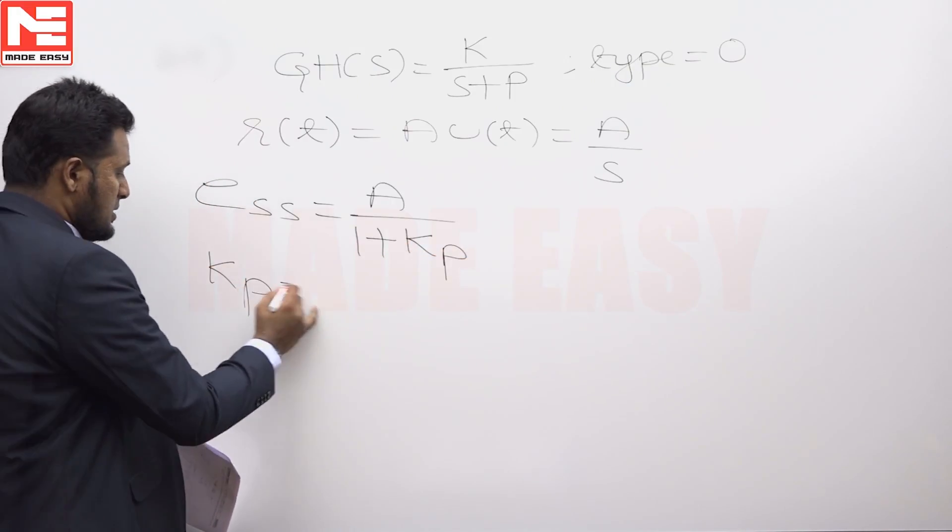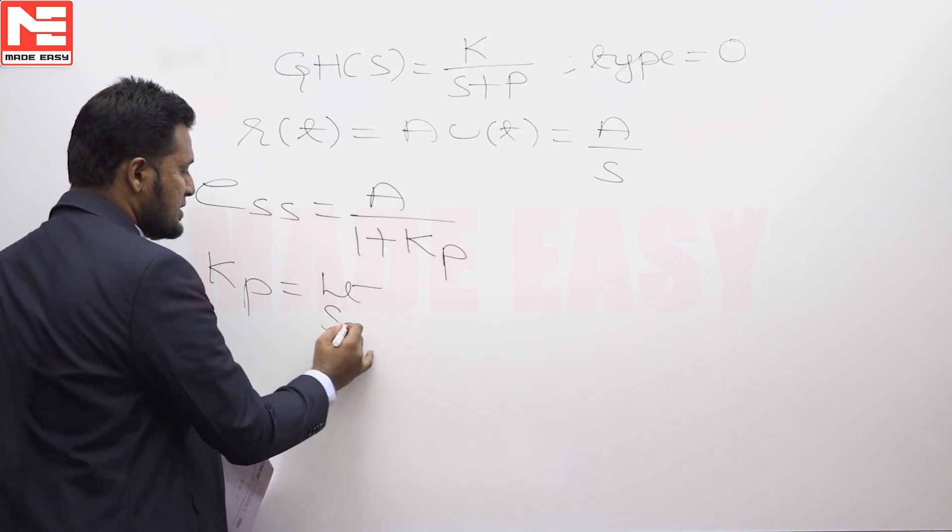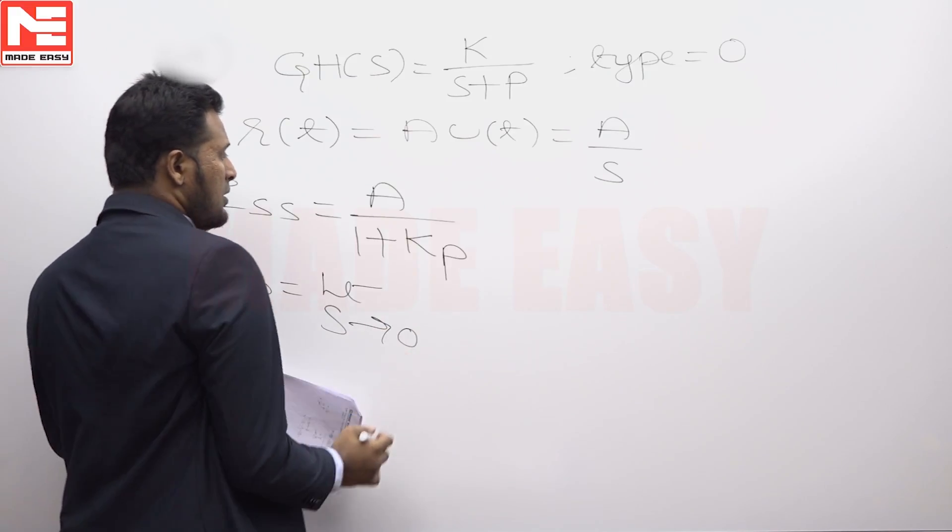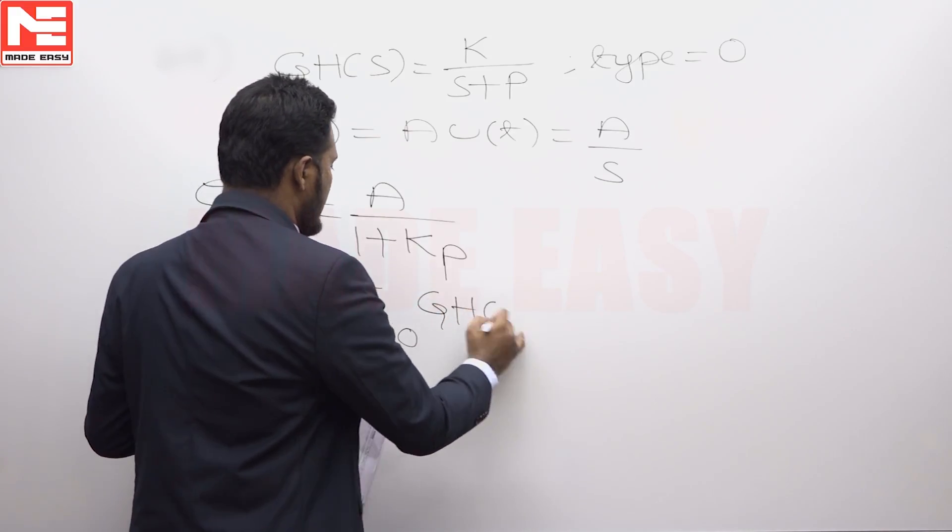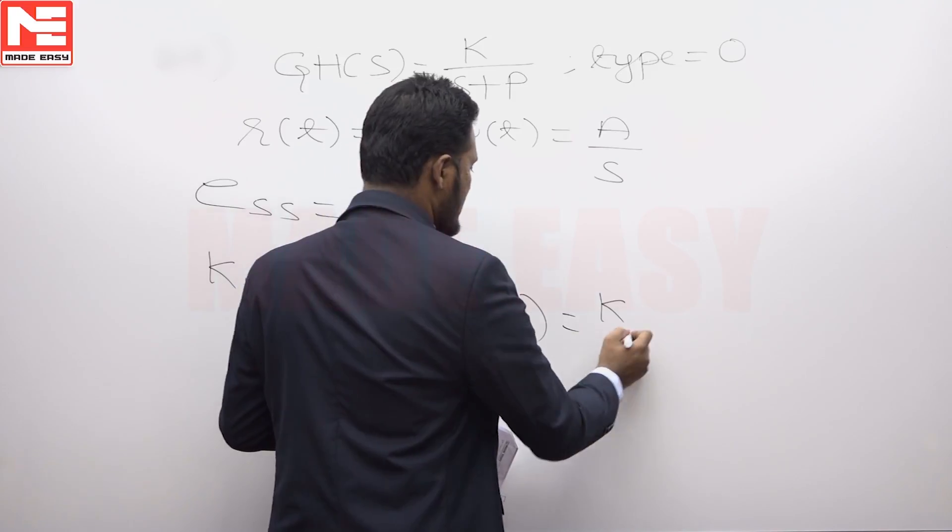K_P is limit S tends to 0 of G(S)H(S), which is K by P.